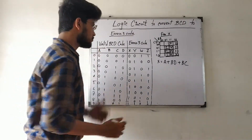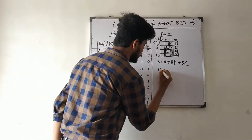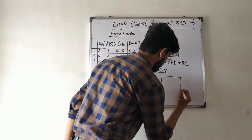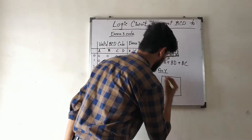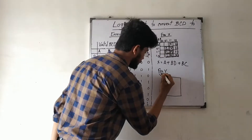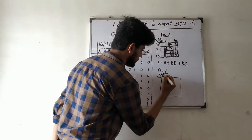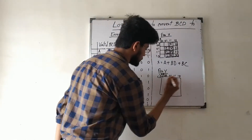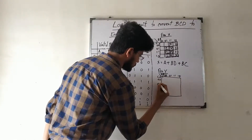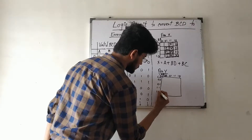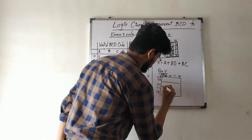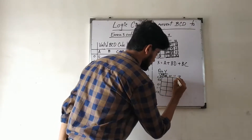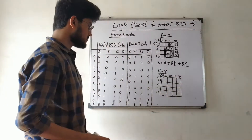Next we take the output Y. We form a new K-map for Y with AB on one axis and CD on the other, giving 16 blocks in a 4×4 K-map, labeled 00, 01, 11, 10 on each axis.